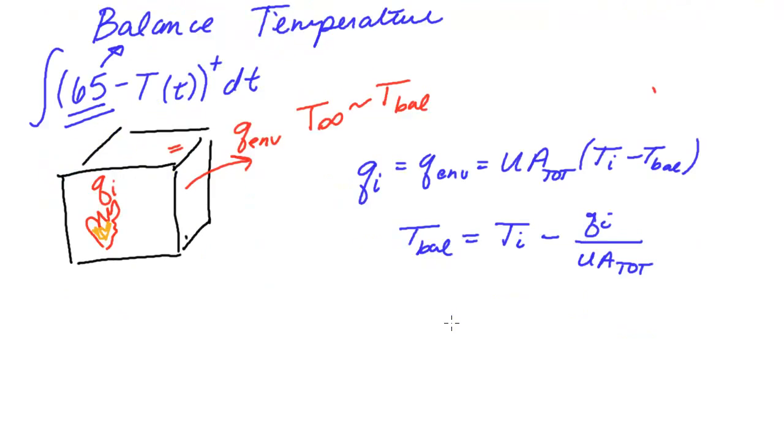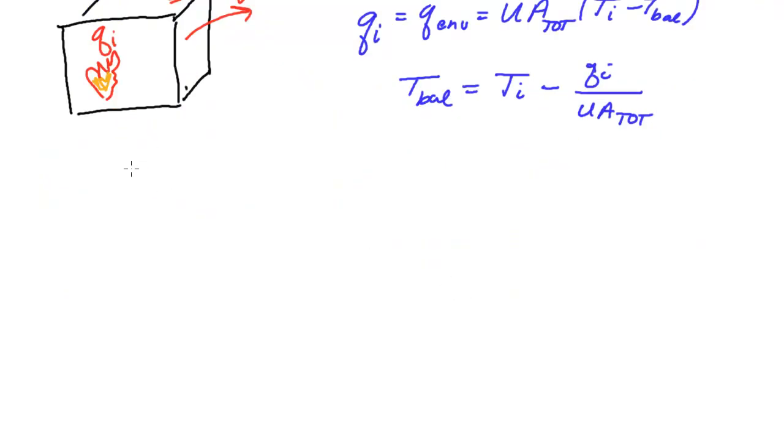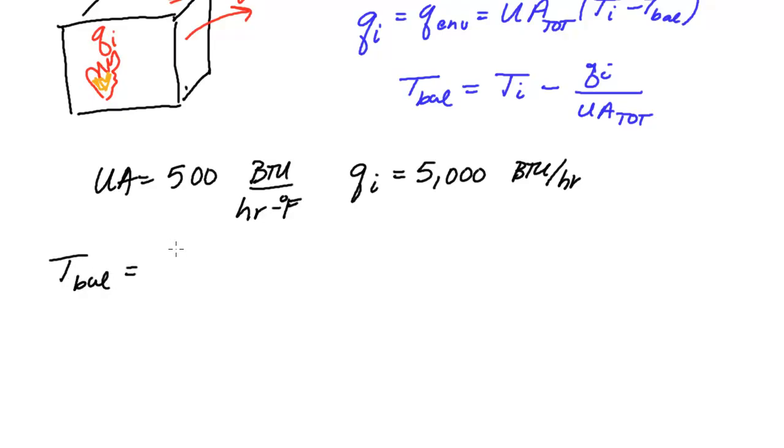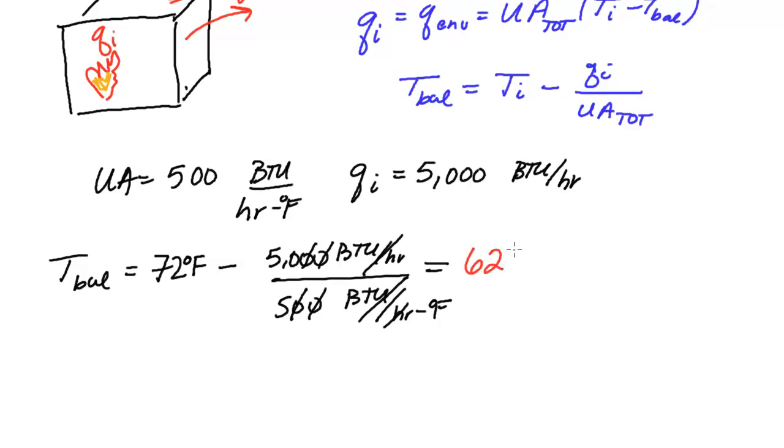So to make this a little even more clear, let's do a quick example. Let's say that our building has a UA value of 500 BTU per hour per degree Fahrenheit. And the internal heat gain is 5000 BTU per hour. What is our T balance temperature here? Let's assume that the interior temperature is 72 degrees Fahrenheit. Put this on top. BTU per hour over 500 BTU per hour degree F. Well, this works. Cancel, cancel. The Fahrenheit comes on top. We're subtracting like things. We have 50 divided by 5. So that's 10. 72 minus 10. This gives us a balanced temperature of 62 degrees Fahrenheit.